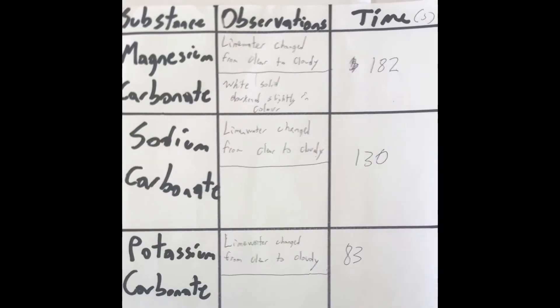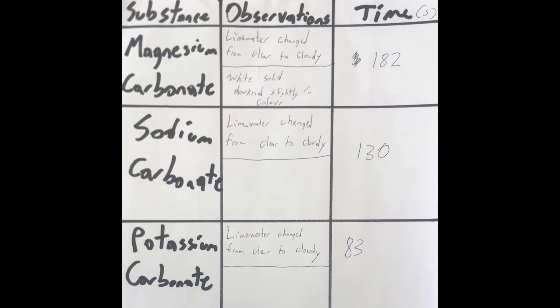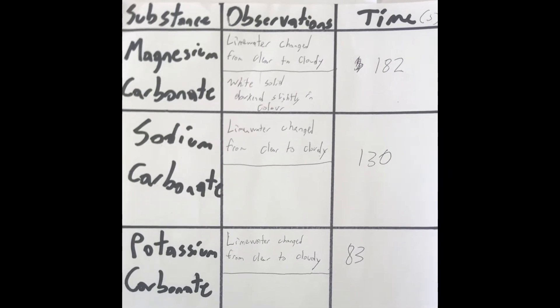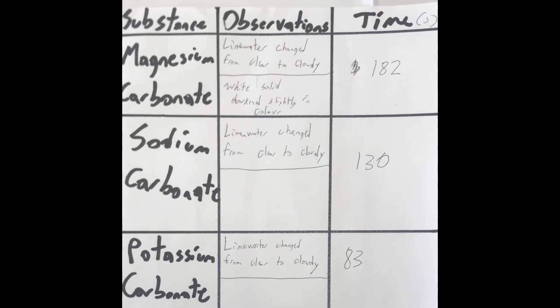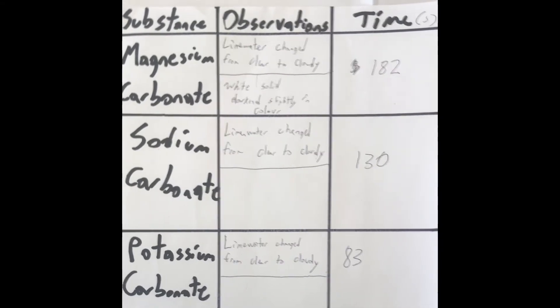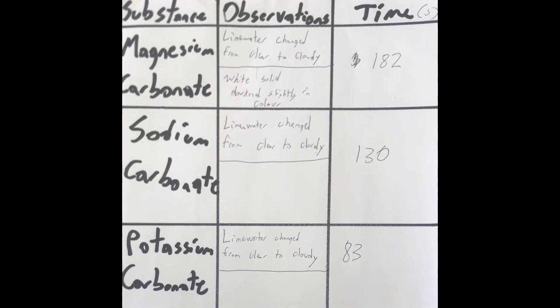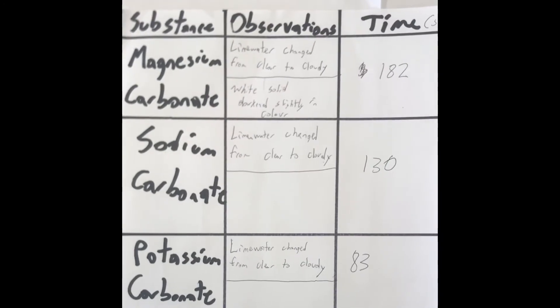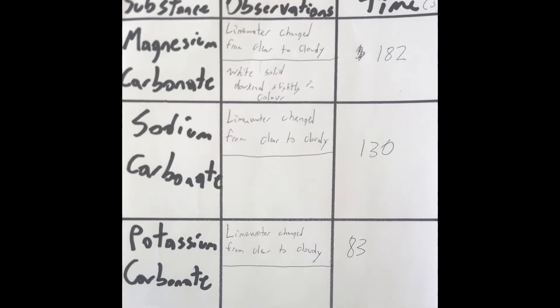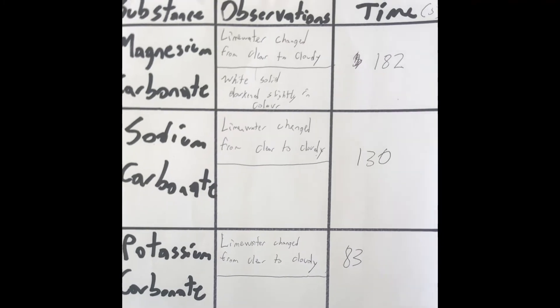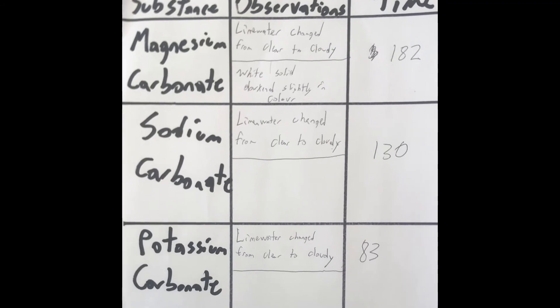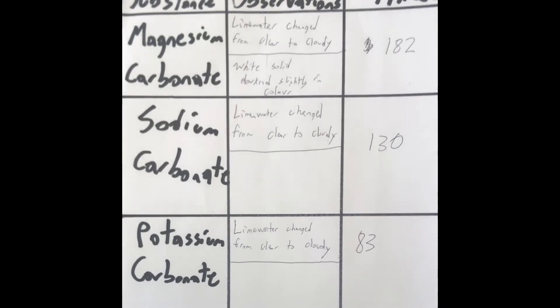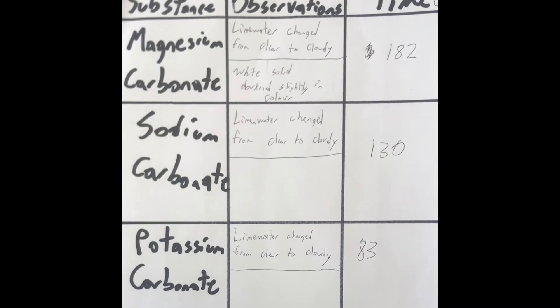To compare the reactions of all three metal carbonates, I've recorded the results in this table. All three substances caused lime water to go from clear to cloudy, indicating that they were producing carbon dioxide gas. Now all three solids either darkened very slightly in color or didn't change at all. That's because all three metal oxides are also white solids, just like the metal carbonates we started with.